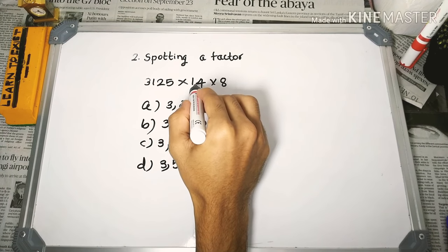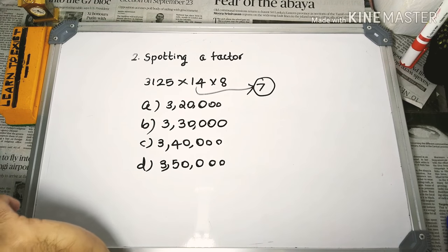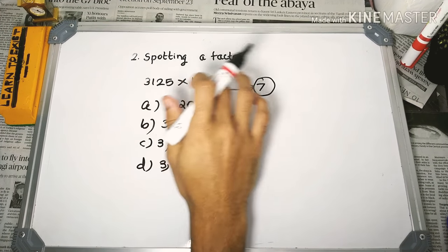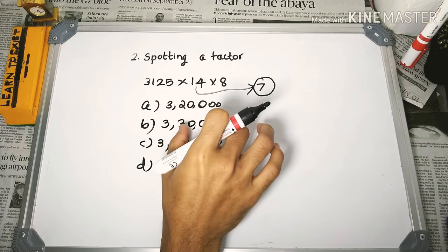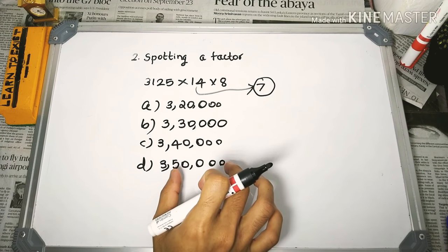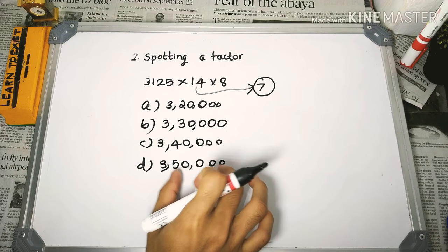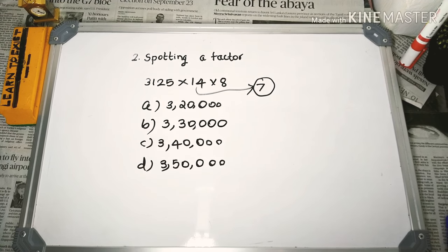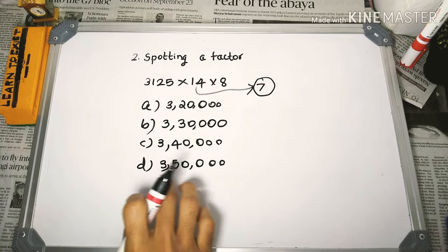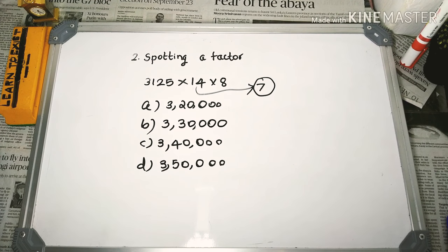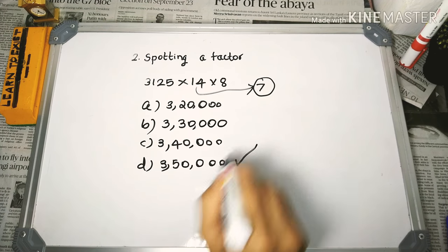We write 14 as a prime number: 14 = 7 × 2. So 7 appears as a prime factor in our product. Looking at the answer options, we check which are divisible by 7. Options with no 7 divisibility — like 33, 34, 35 — are eliminated. 3,50,000 is divisible by 7, so if that option is divisible by 7, it is the correct answer.